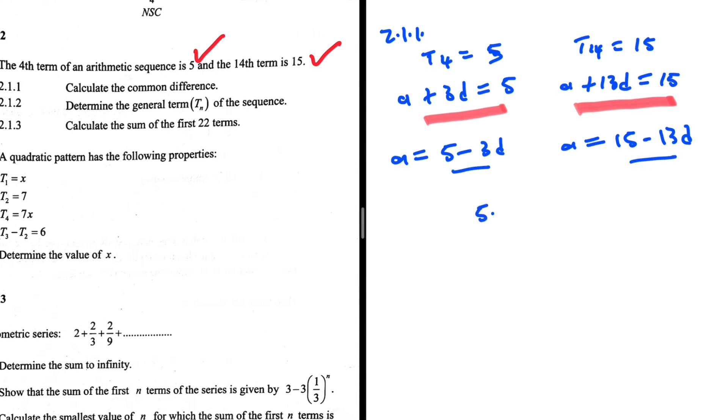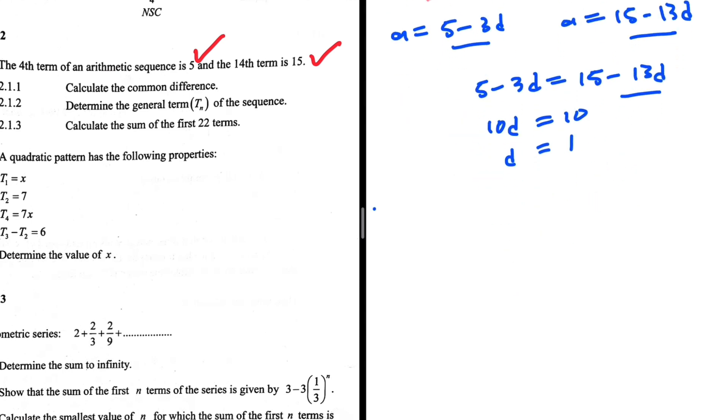So 5 minus 3d is equals to 15 minus 13d. Let's take minus 13d to the left hand side. We're gonna get plus 10d. Minus 3 plus 13, this equals 15 minus 5 which is 10. It should be easy to see that d is equals to 1. There we go, 2.1.1.